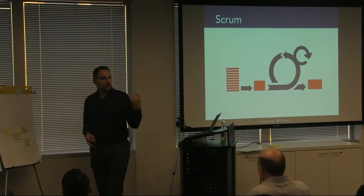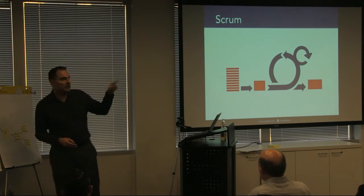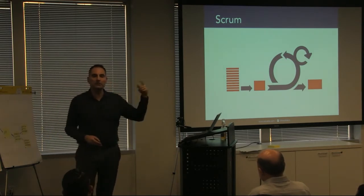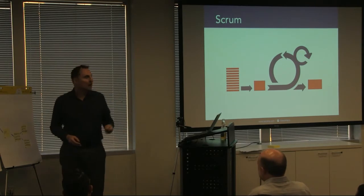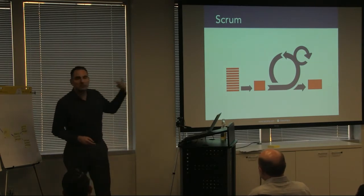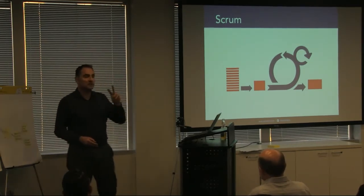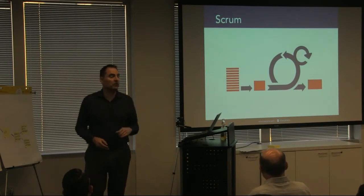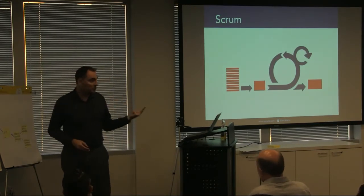There's the daily Scrum — a loop where every day we check what happened yesterday and ask whether we need to change our plans. Then there's the sprint itself, which you could argue is actually two separate learning loops because we're learning about both the product and the process.